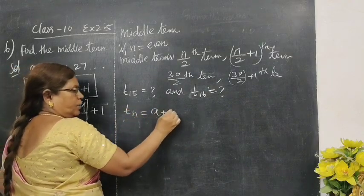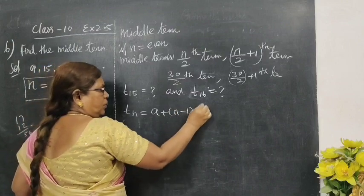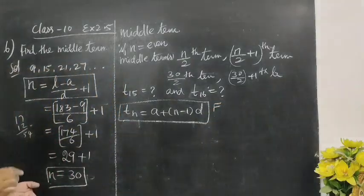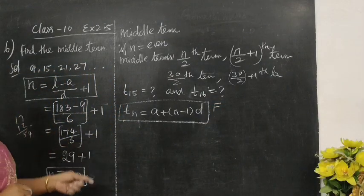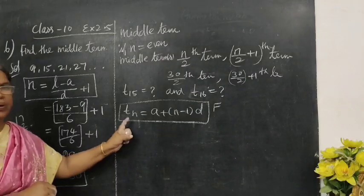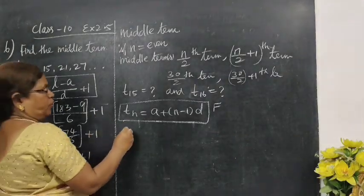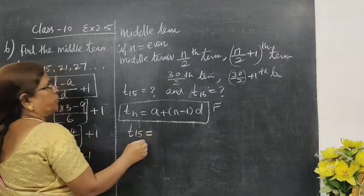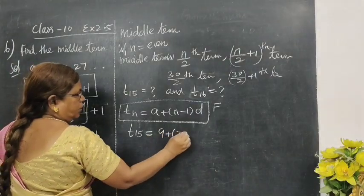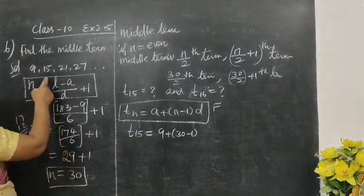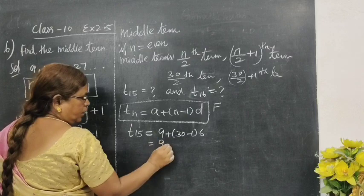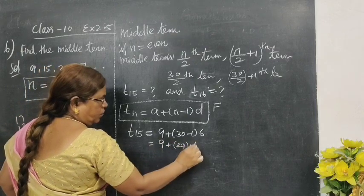So, tn formula is a plus n minus 1 into d. So, whenever you write the formula, you put a box. You put a box, put a one mark above. Suppose the total is a mistake, put a grace mark above. So, the formula is in a box. Now, t15 equals A, 9, plus n, 30, minus 1, into d, 6, so equal to 9 plus 29 into 6.